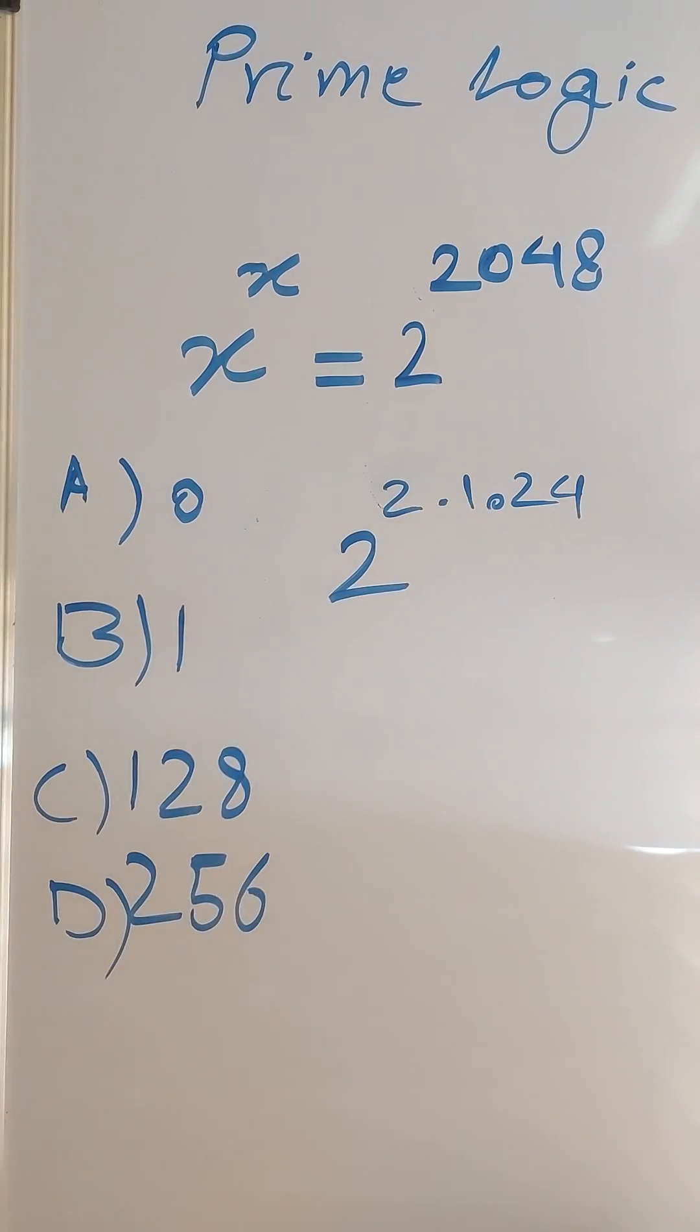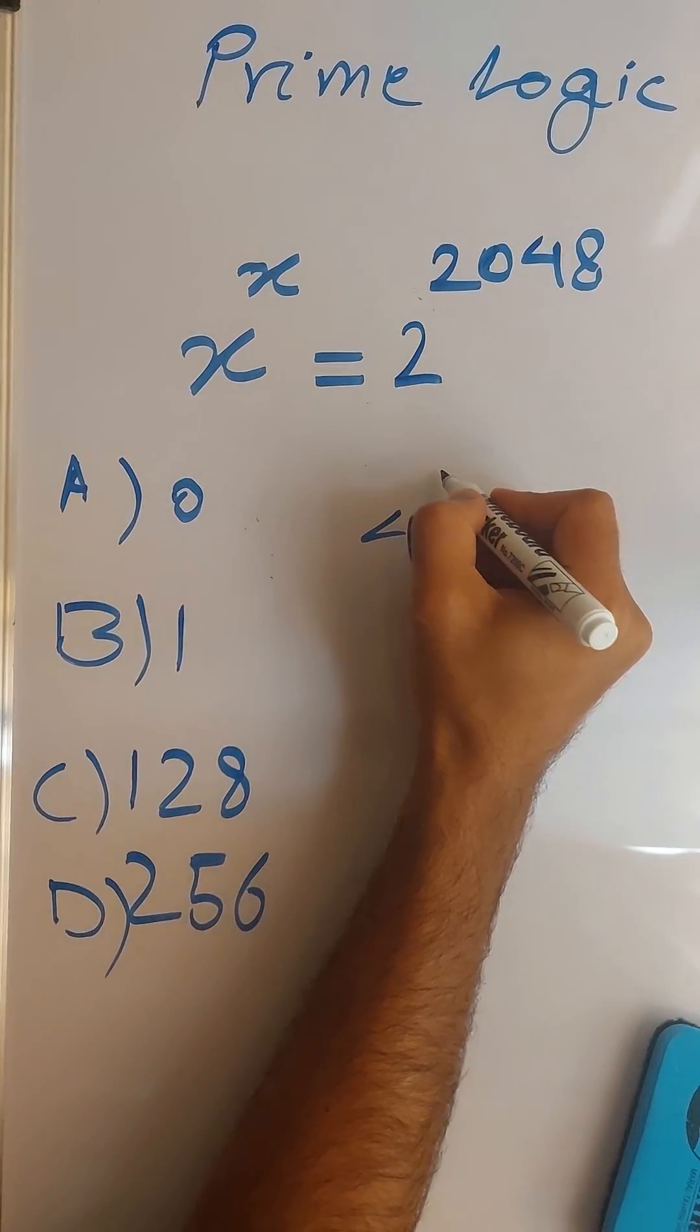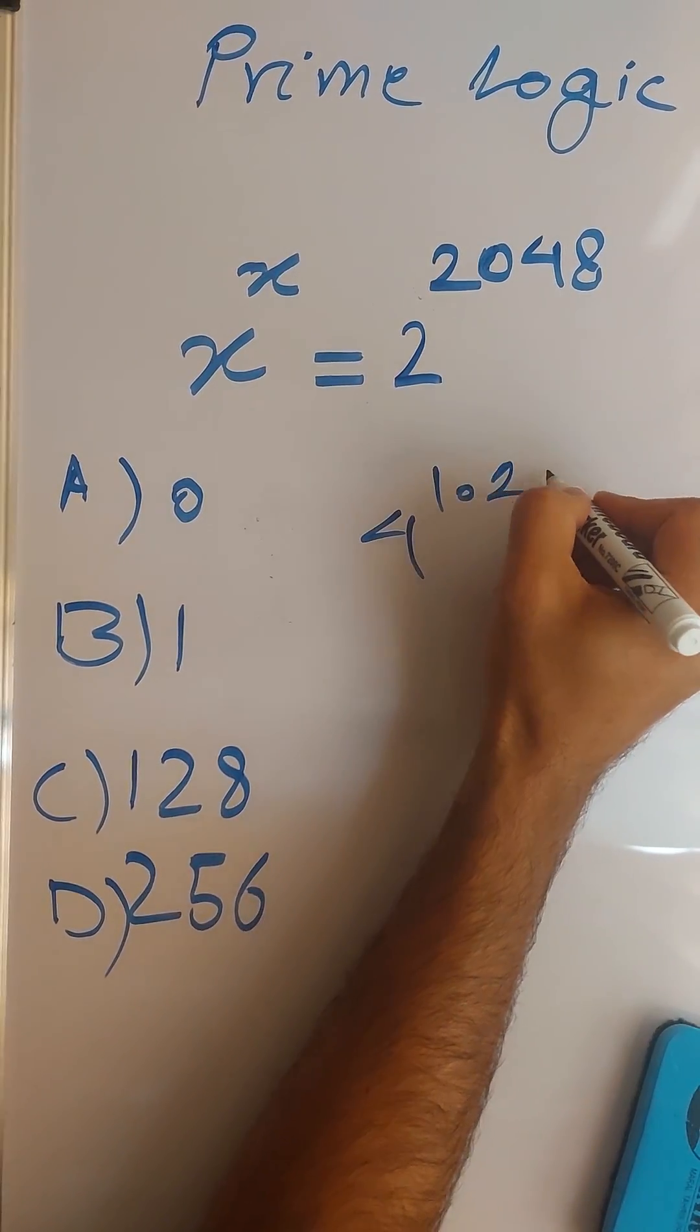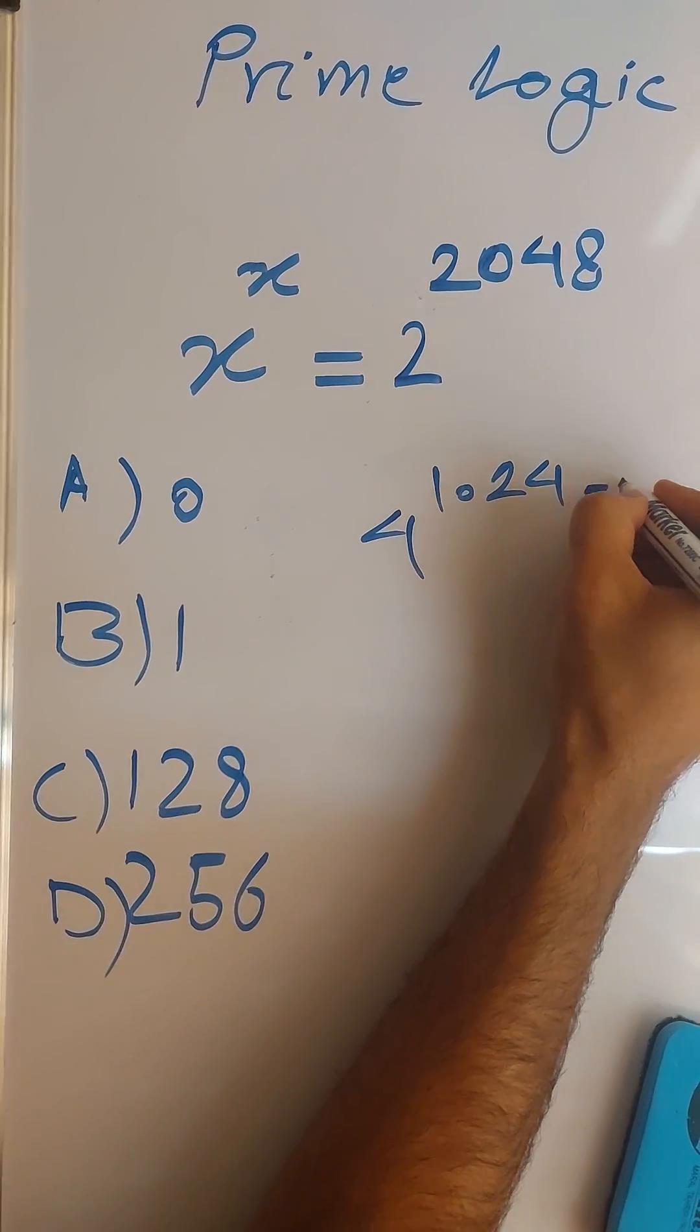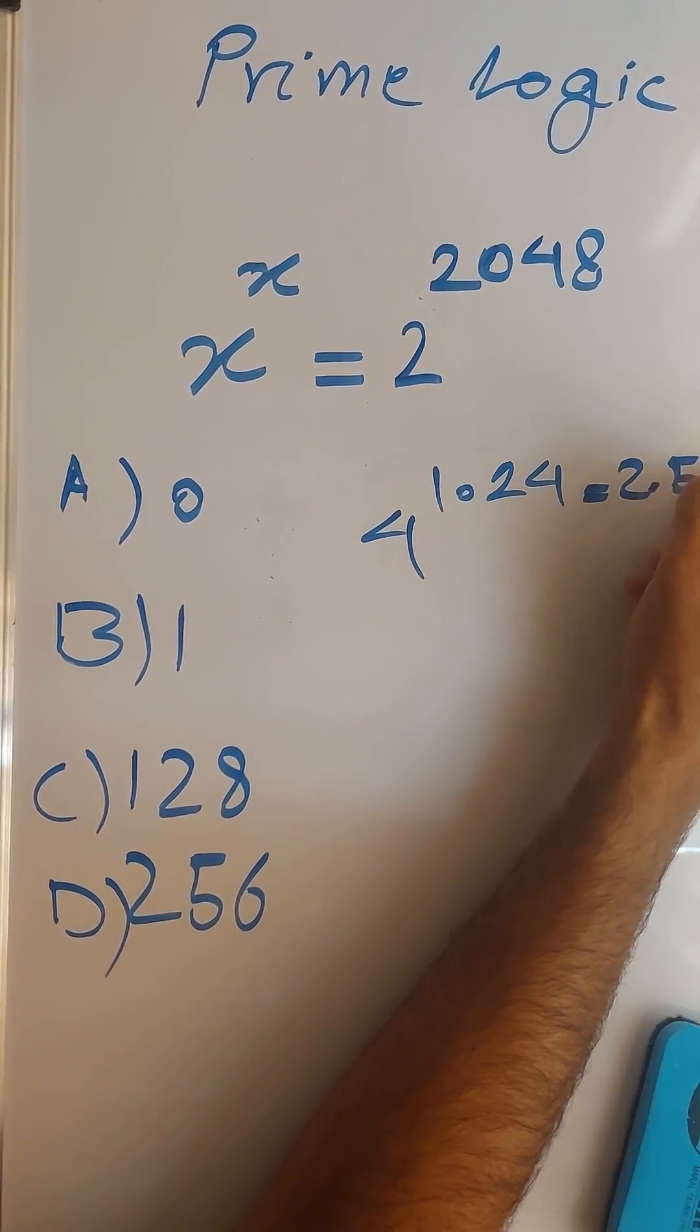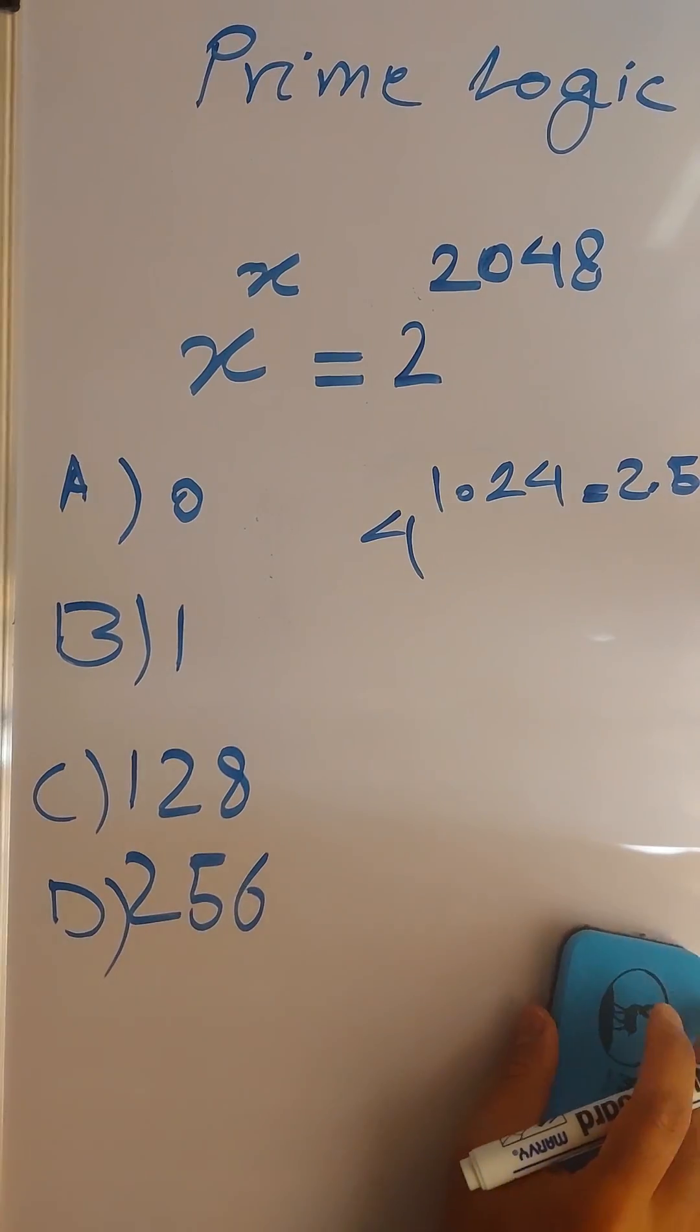So 4 to the 1024, then we can repeat this step again. So 1024 is the same as 2 times 512. 4 to the power of 2 is 16, so 16 to the power of 512.